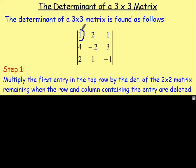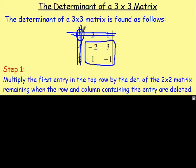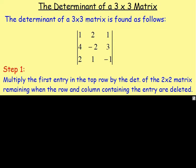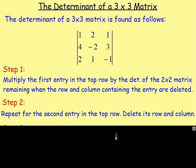So you take the first entry in the top row — it's going to be 1 times — and if you delete that row and that column, you're left with the remaining 2x2 matrix. You take that entry 1 and multiply it by the determinant of the remaining matrix. Step 2: repeat that for the second entry in the top row. The second entry is 2, so you'd have 2 times the determinant of the remaining matrix after deleting its row and column — which leaves 4, 3, 2, negative 1.